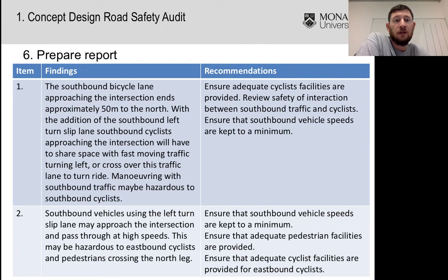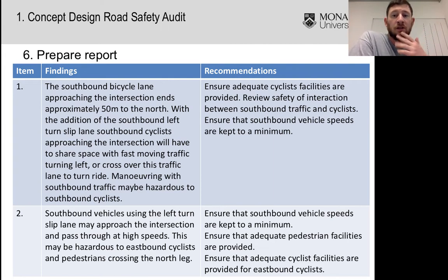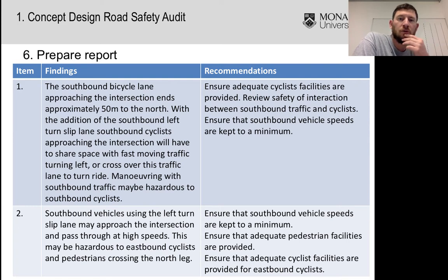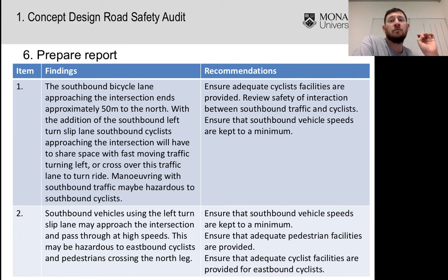A road safety audit report pretty much always has a table at the back with findings and recommendations. Sometimes the report might only have findings — I know in New South Wales they specifically stated they only wanted findings, not recommendations. But the typical approach I'm used to is: you make a finding, describe why something is unsafe, and then provide at least a few recommendations about what might happen, helping push the design in the right direction.